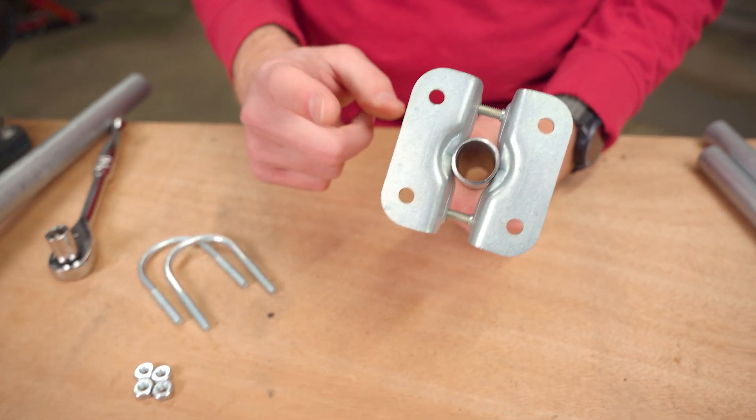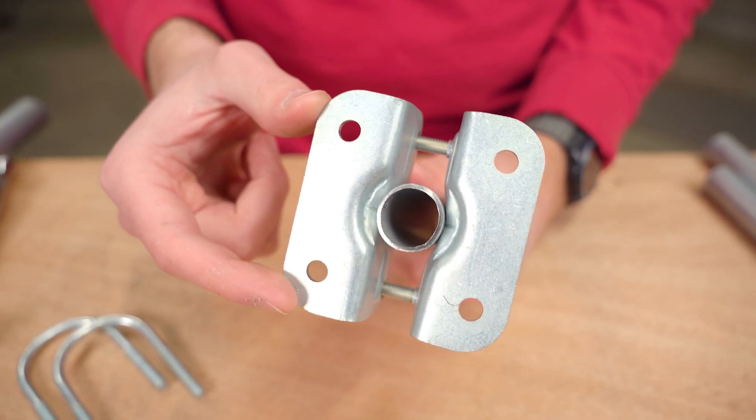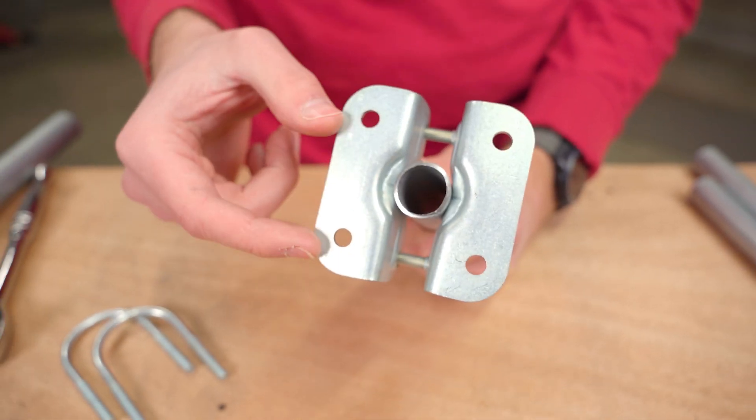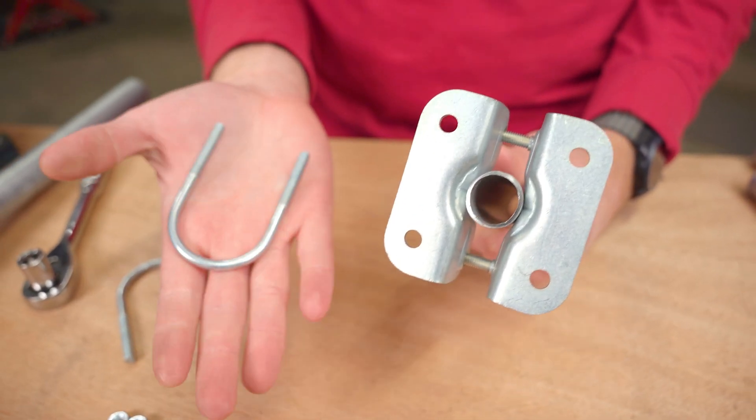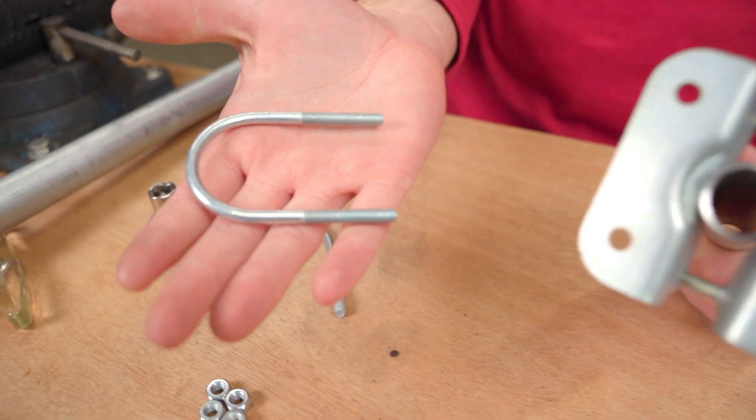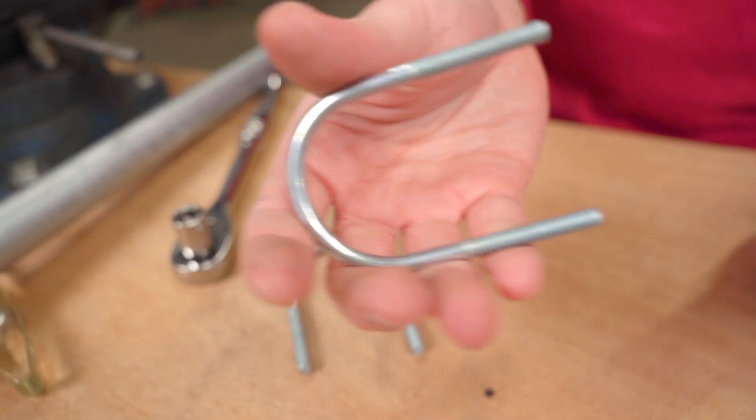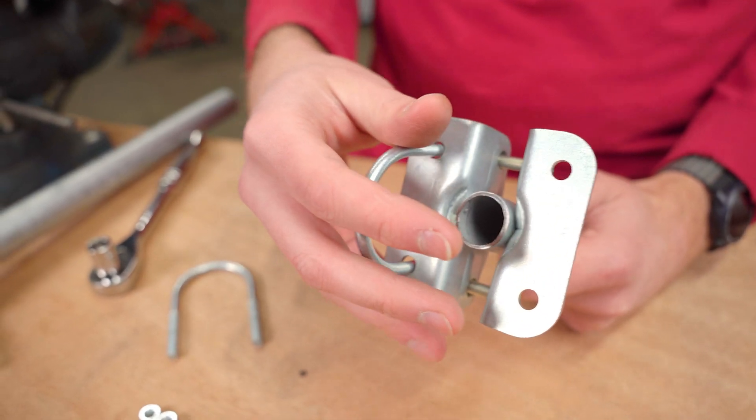Essentially we're using the flat bottom part that you're supposed to mount to a flat surface. These holes are two inches apart, but we found that you can get these U-bolts. These were specifically from McMaster-Carr. They have an inch and three-quarter inner diameter and they fit inside of the bolt holes perfectly.